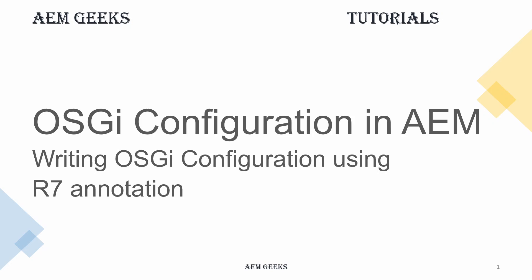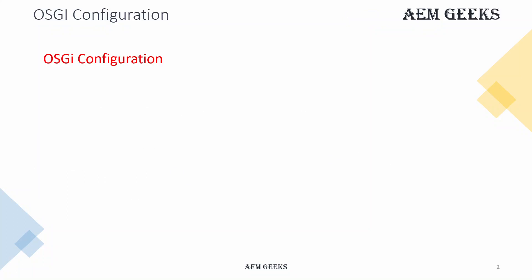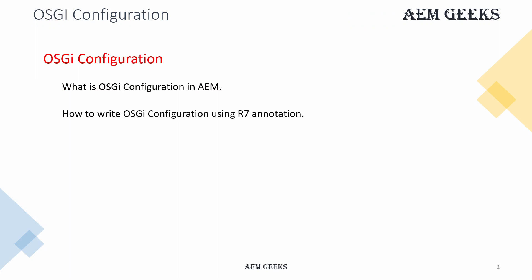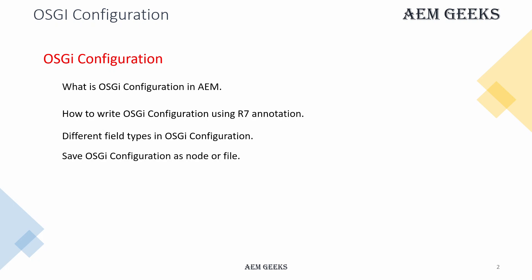In this tutorial I will talk about OSGi configuration in AEM using R7 annotations. What I will cover is: basics of OSGi configuration, what OSGi configurations are, how to write OSGi configuration using R7 annotations, the different important fields of OSGi configuration, how you can store those configurations inside the repository as a node or file, and then we'll have a demo.